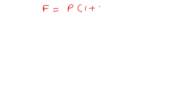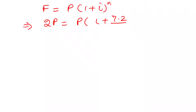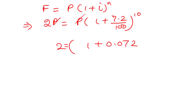Using the future value formula F = P × (1 + i)^n, since F should be double the principal, we set 2P = P × (1 + 7.2/100)^10, which simplifies to 2 = (1 + 0.072)^10. To solve for i, we can take logarithms on both sides.